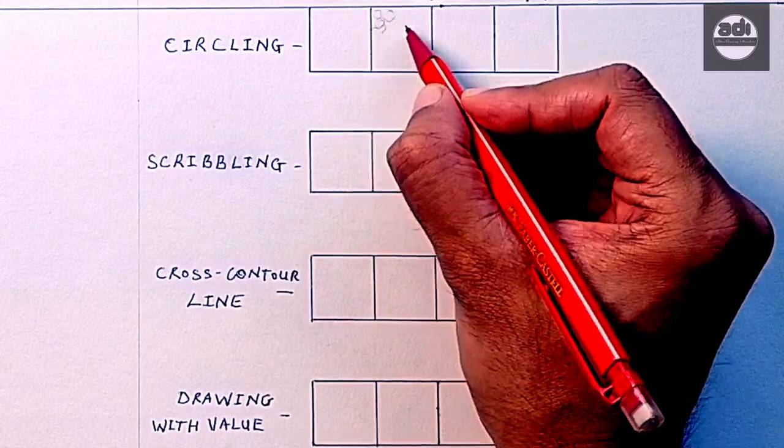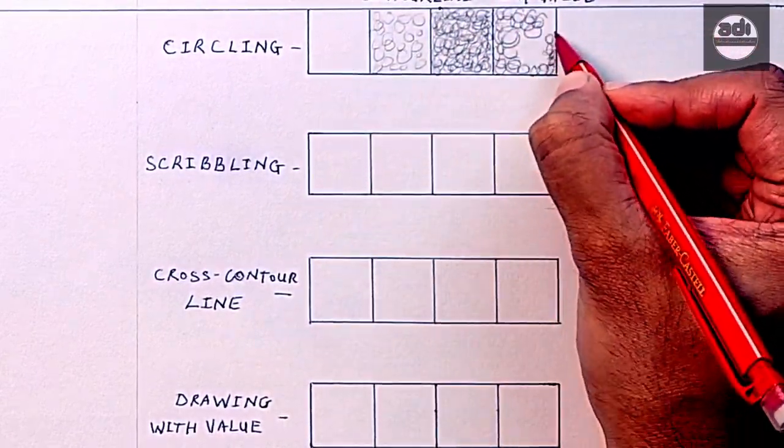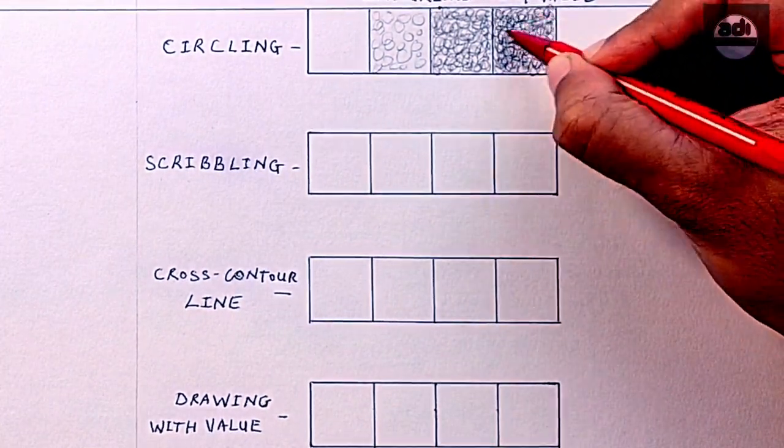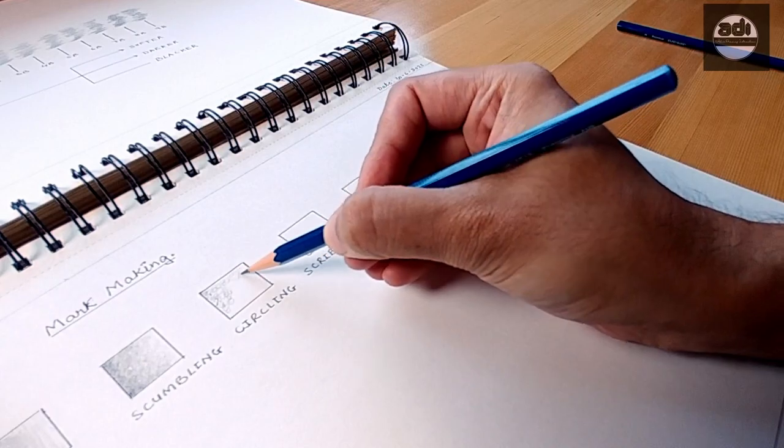Circling is a mark making technique in which you draw circles to create value and texture. A value range can be achieved by varying the size of the circles, by layering, and by using different grades of pencils.